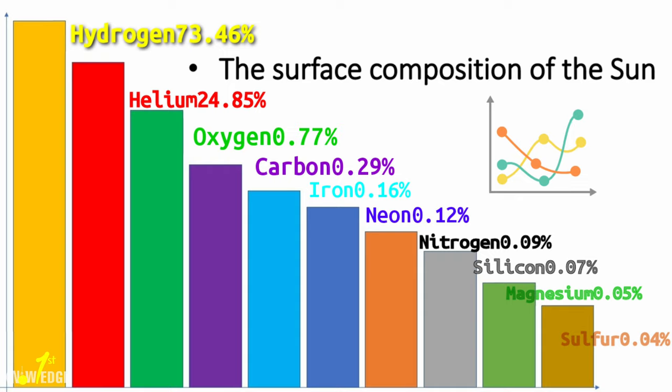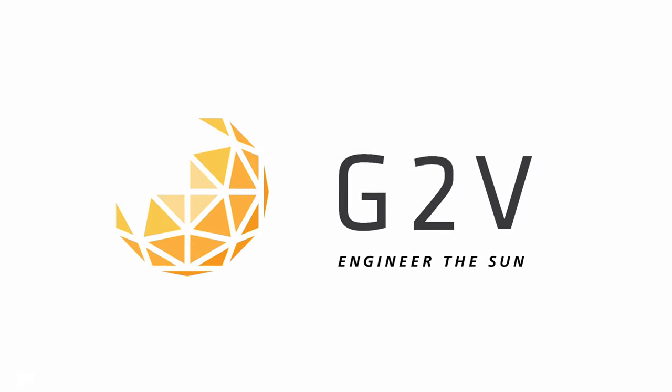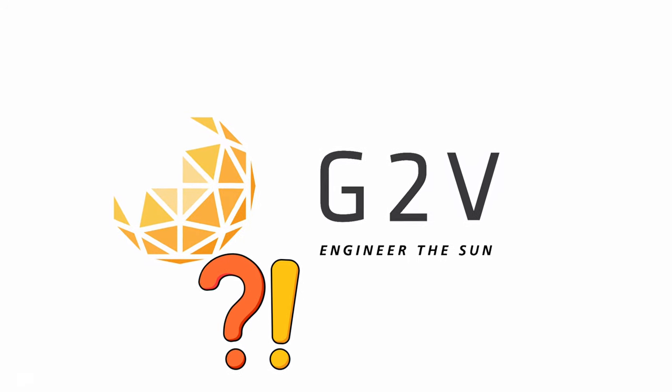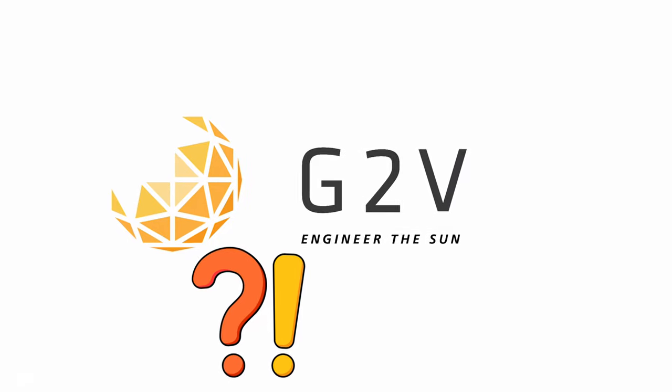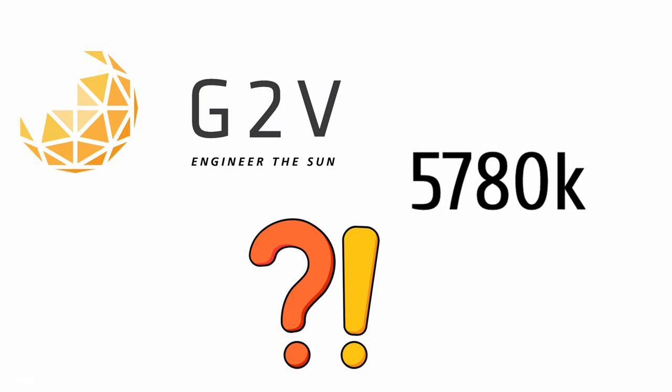The sun has a spectral class called G2V. That spectrum contains ionized and neutral metal lines as well as very weak hydrogen lines. G2 is defined as having a surface temperature of 5780 Kelvin and therefore appears white. Due to atmospheric scattering, the sun appears yellow from the Earth's surface.